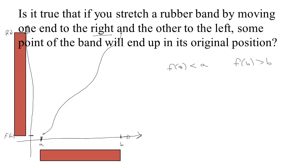I think I've got that right. So, we moved A, the left endpoint, to the left, so now F of A is less than A. We also know that F of B is greater than B.